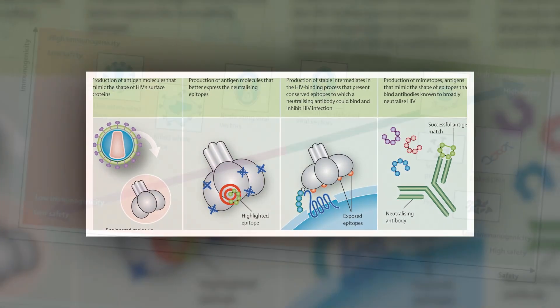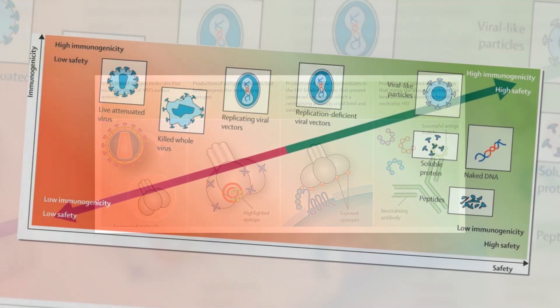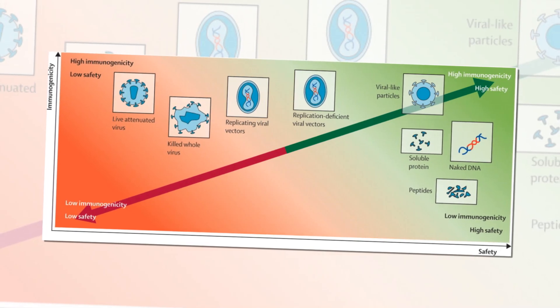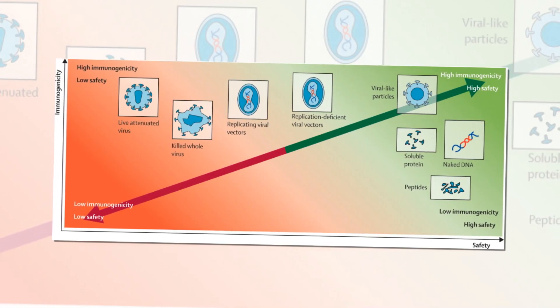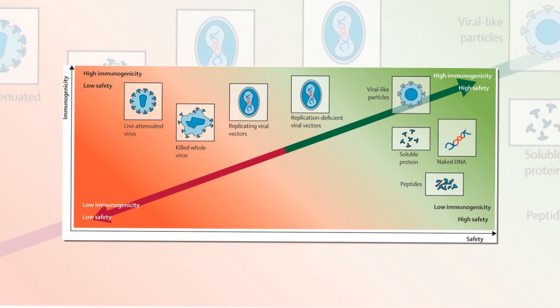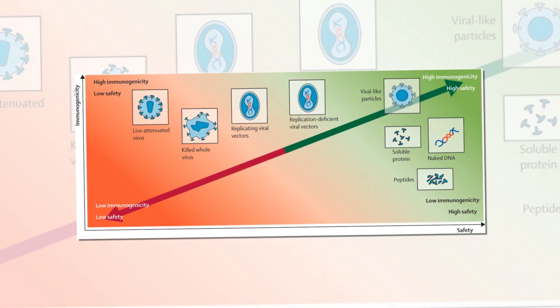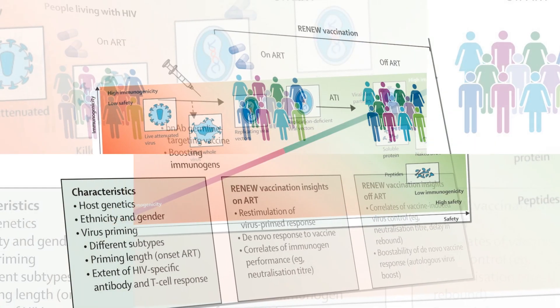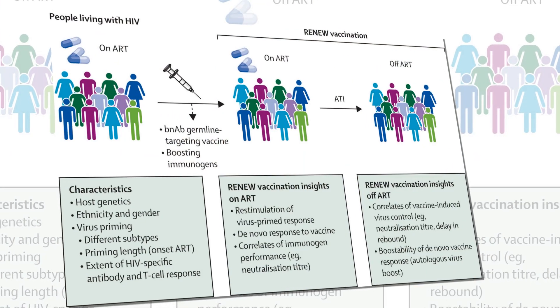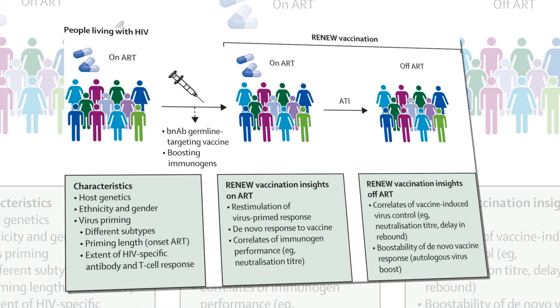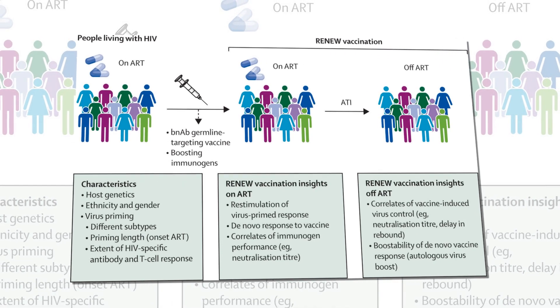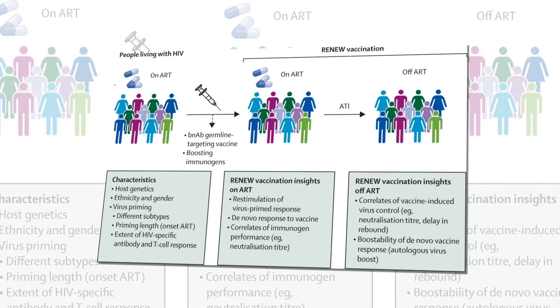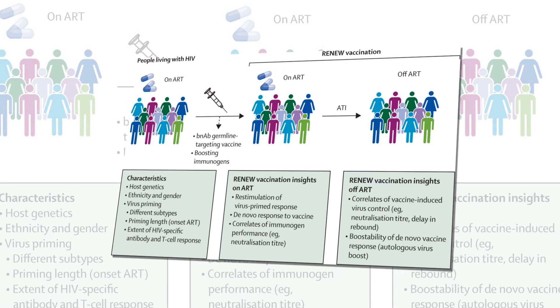In the second study, published in Science Translational Medicine, the Scripps team working with scientists at the U.S. National Institutes of Health's Vaccine Research Center and vaccine maker Moderna tested the first booster immunogen, dubbed Core-g28v2 60-mer. Mice boosted with Core-g28v2 60-mer after an initial eOD-GT8 60-mer primer produced bnAbs closer to VRC01 than mice that got a placebo booster.